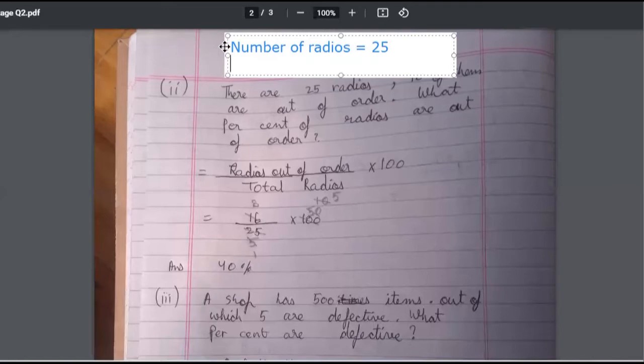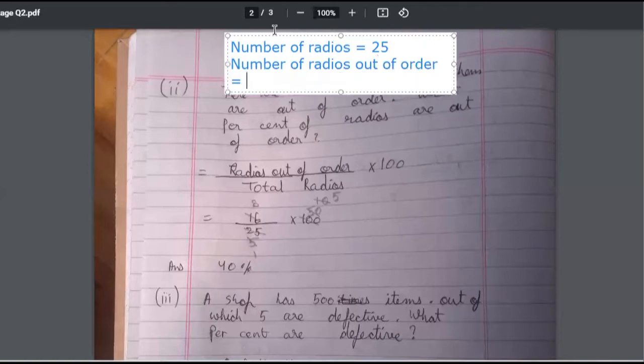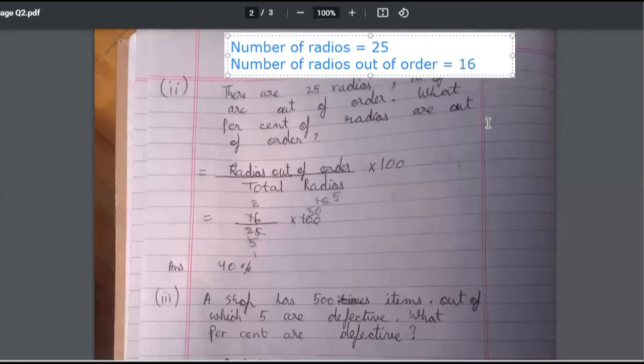Number of radios equals 25. What will be the next statement? Radios out of order. Number of radios out of order. How many out of order are there? 16. So these two statements are important.